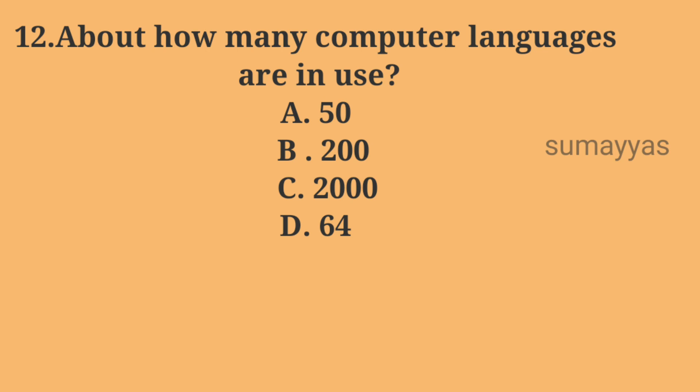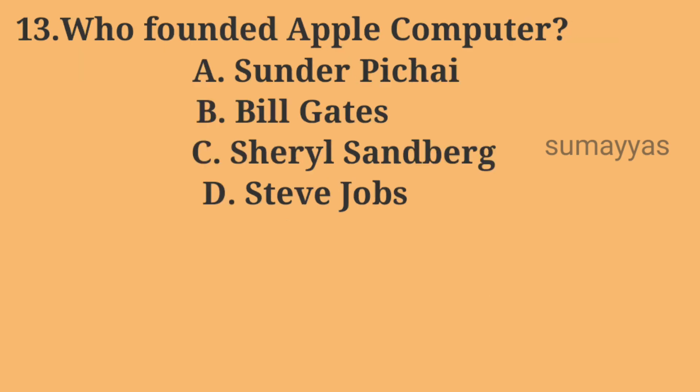Next question: about how many computer languages are in use? Option A: 50. Option B: 200. Option C: 2000. Option D: 64. The correct answer is Option C: 2000.